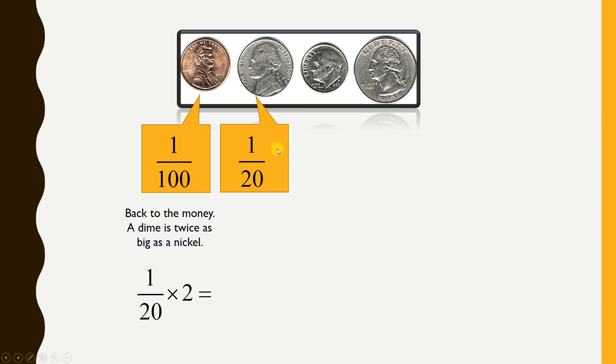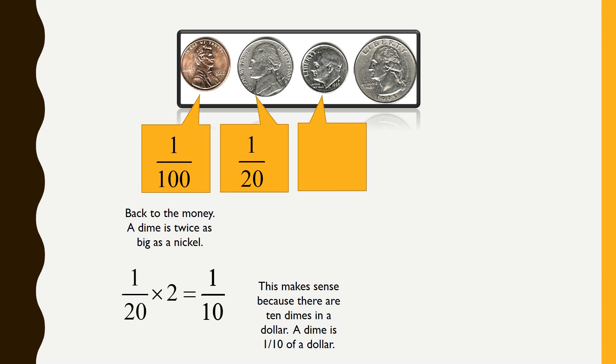Now, a dime is worth two nickels, right? And, a nickel is one twentieth. So, to figure this out, again, of course, I take the two and divide it by one. So, I can multiply those fractions and I get two over twenty. Now, again, two over twenty is the same as two times one divided by two times ten. And, while I don't normally write this math out, I wanted to show you so you see what's happening. And, two divided by two is one and you're left with one tenth. And, that makes sense because there are ten dimes in a dollar, right?